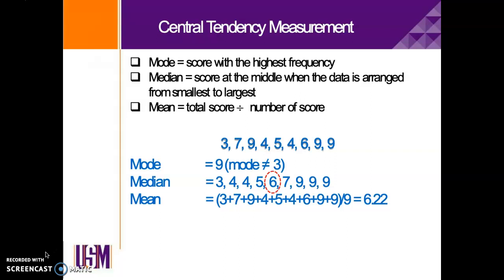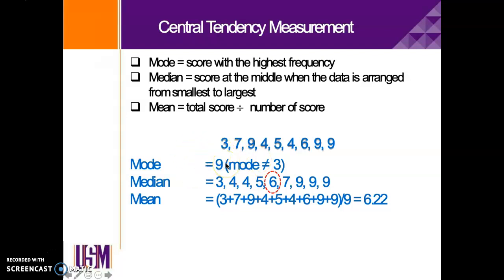Let's say for this example we have nine scores collected from your sample, and the scores are: 3, 7, 9, 4, 5, 4, 6, 9, 9. How do we get the mode? Mode is the score with the highest frequency. If you can see, nine is the mode — there are three occurrences of nine. Please remember that we don't write the mode as three; we write the score, which is nine. The number of frequency is three, but we write the score, not the highest frequency.